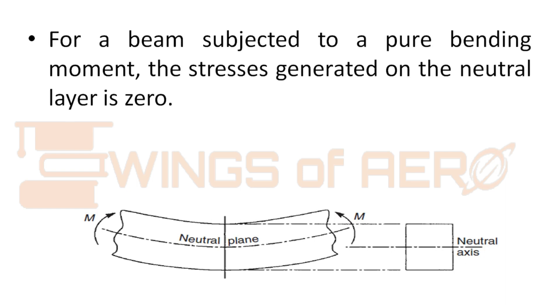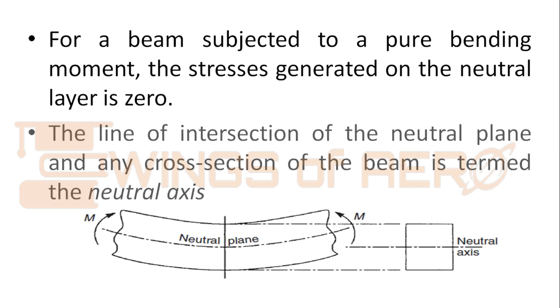the stress generated on the neutral layer is zero. The line of intersecting of the neutral plane and any cross section of the beam is also called the neutral axis.